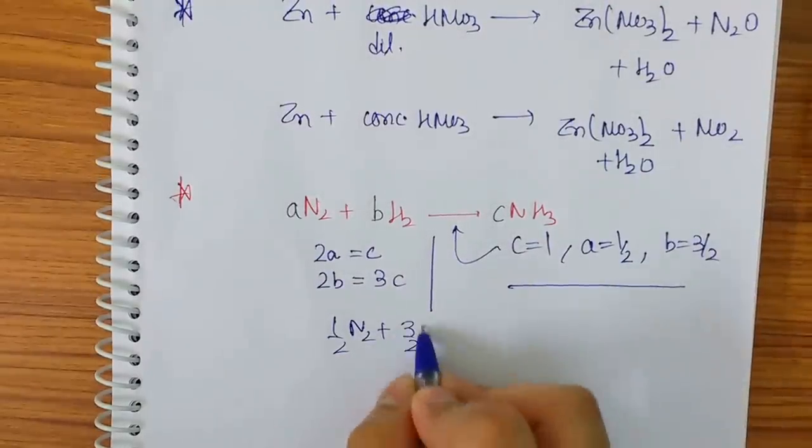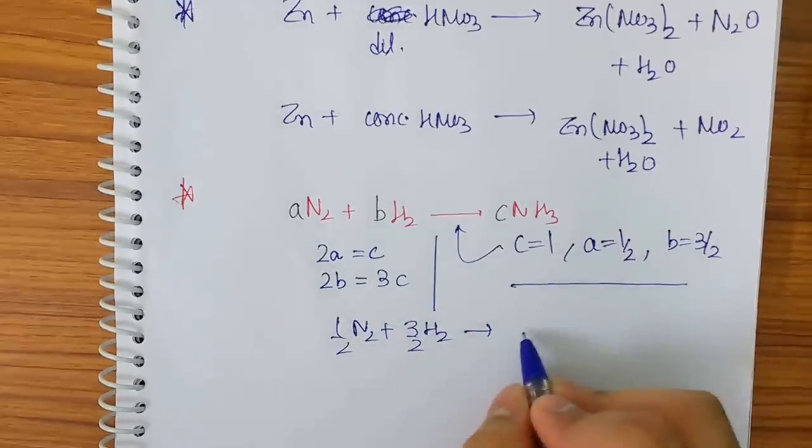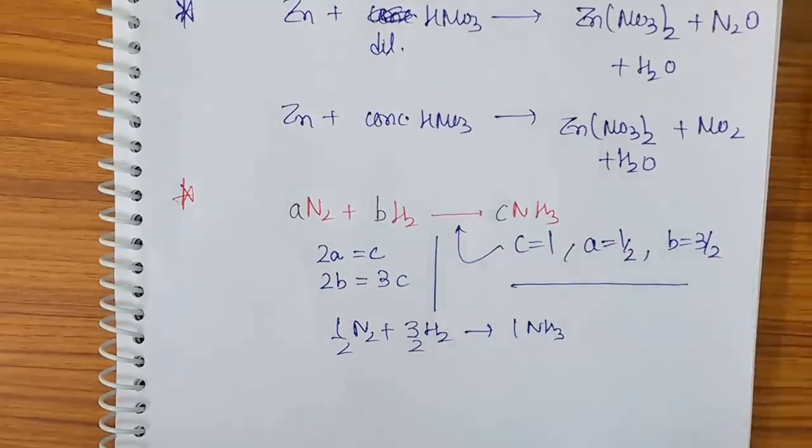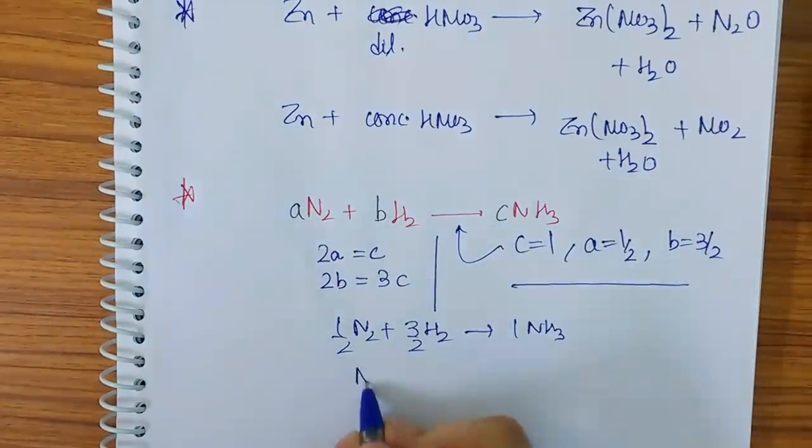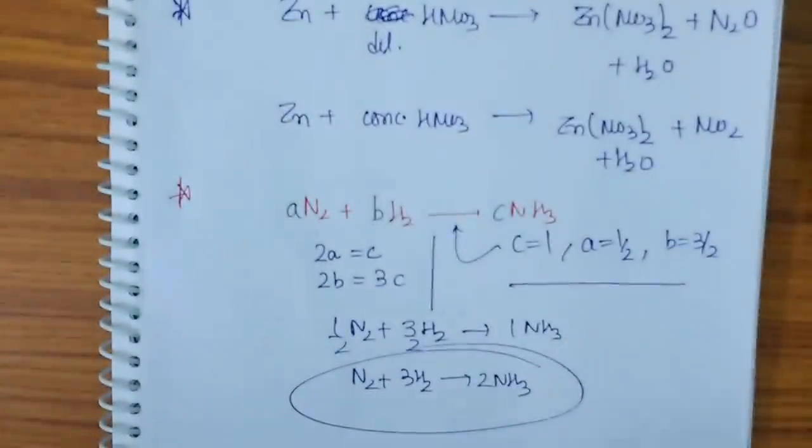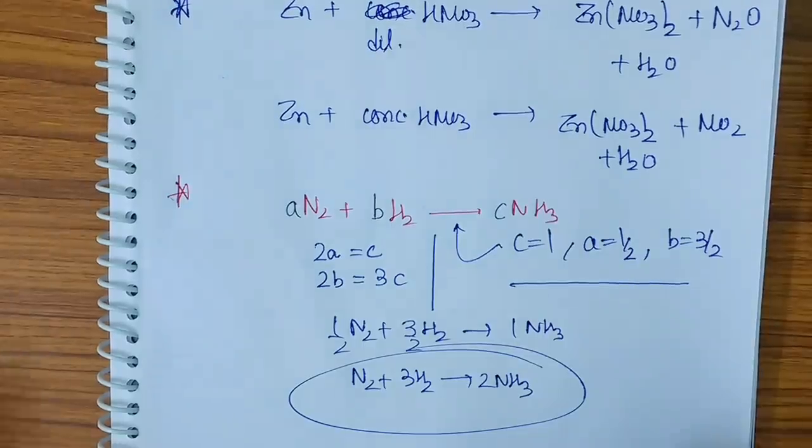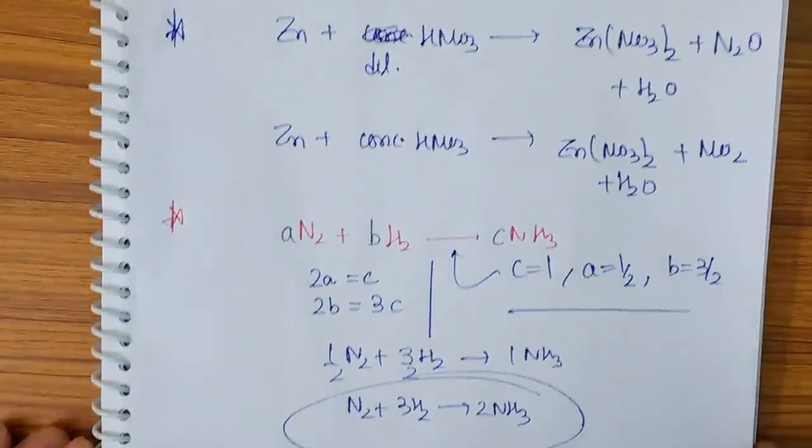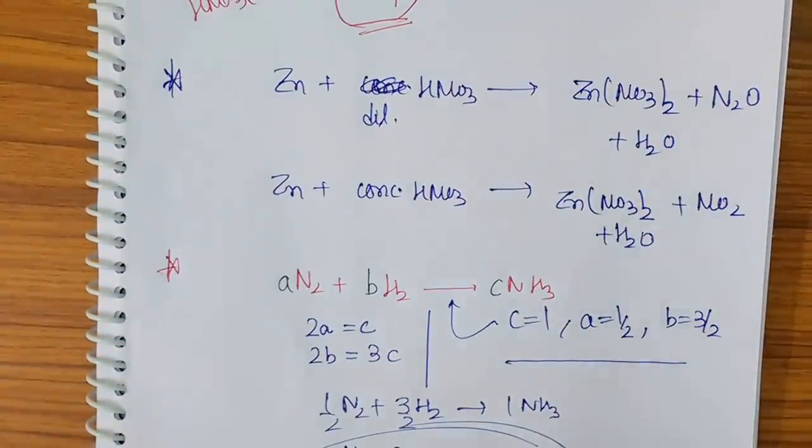So let me put here. What is A? 1/2 N2. What is B? 3/2 H2. What is C? 1, so 1NH3. Multiply by 2 on both sides, so N2 + 3H2 will give me 2NH3. So you can balance the equations like this by knowing the products.